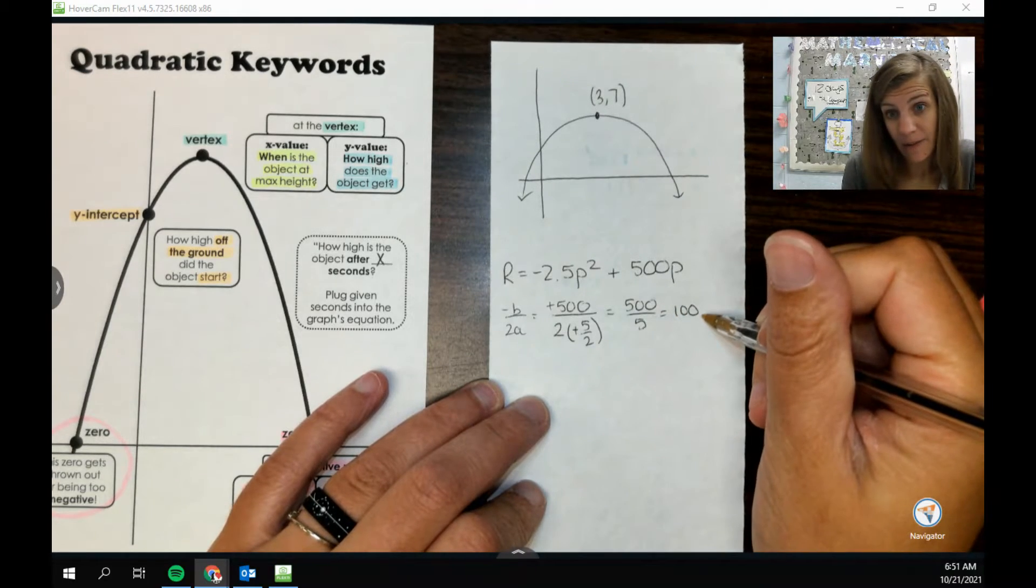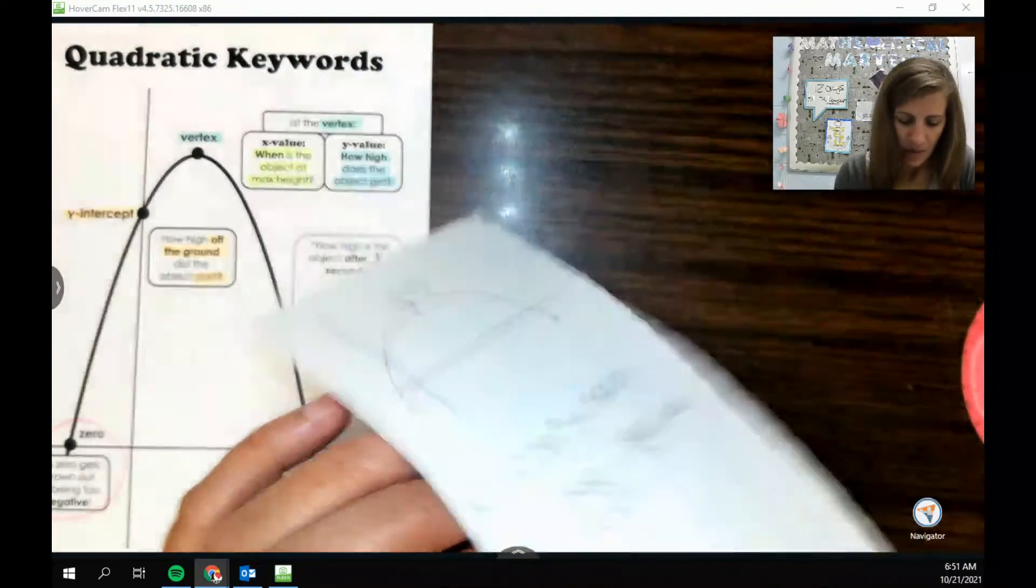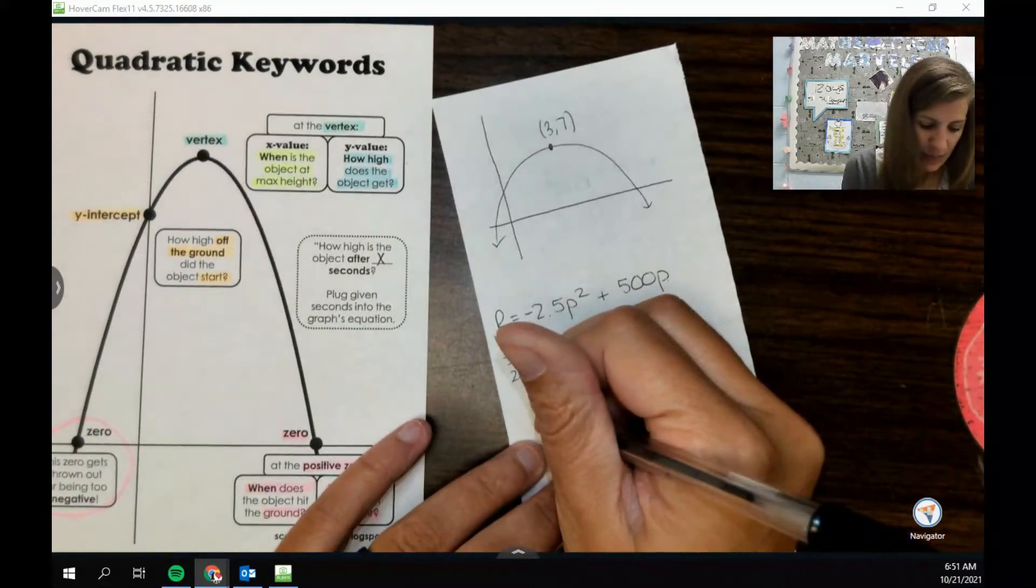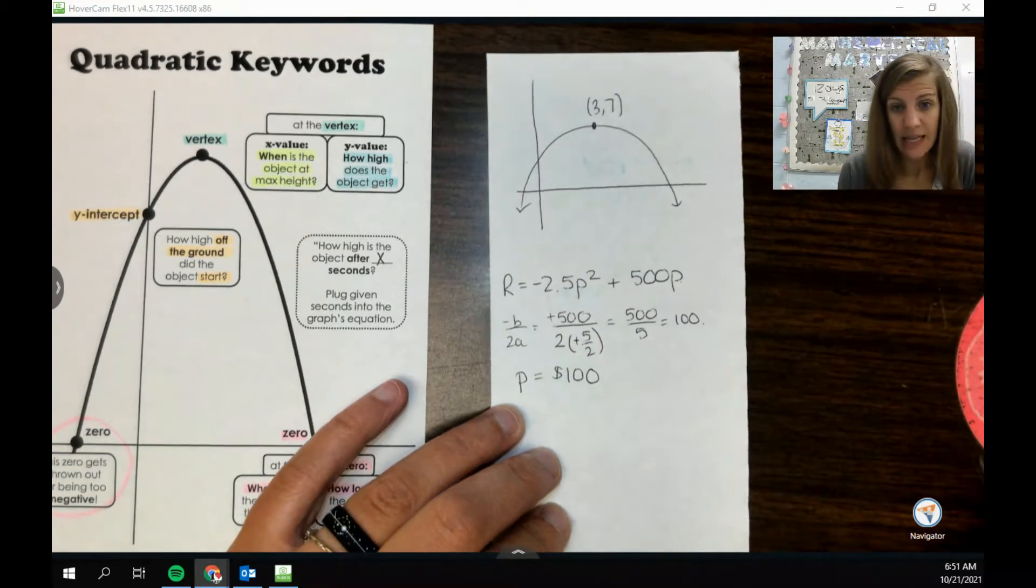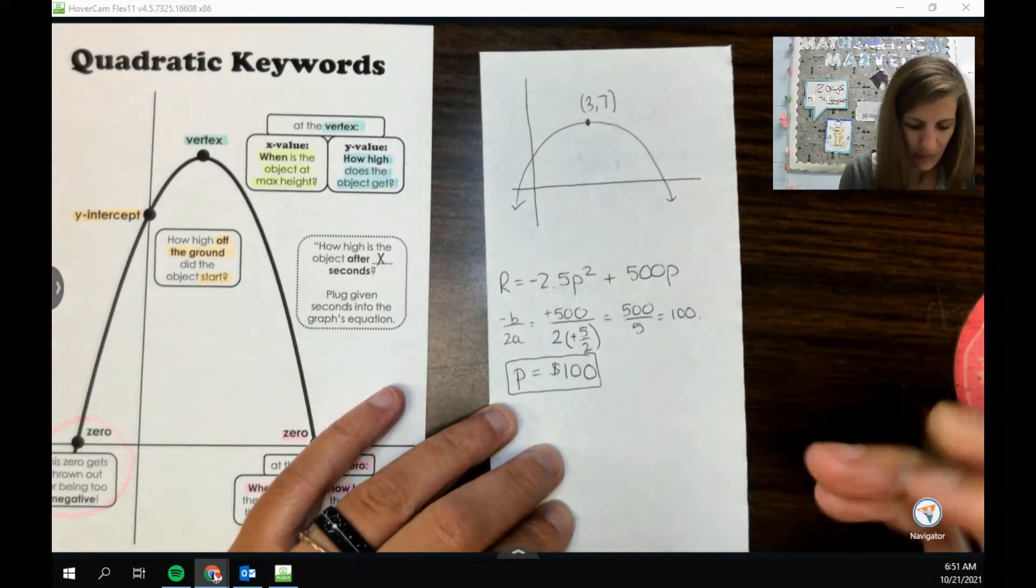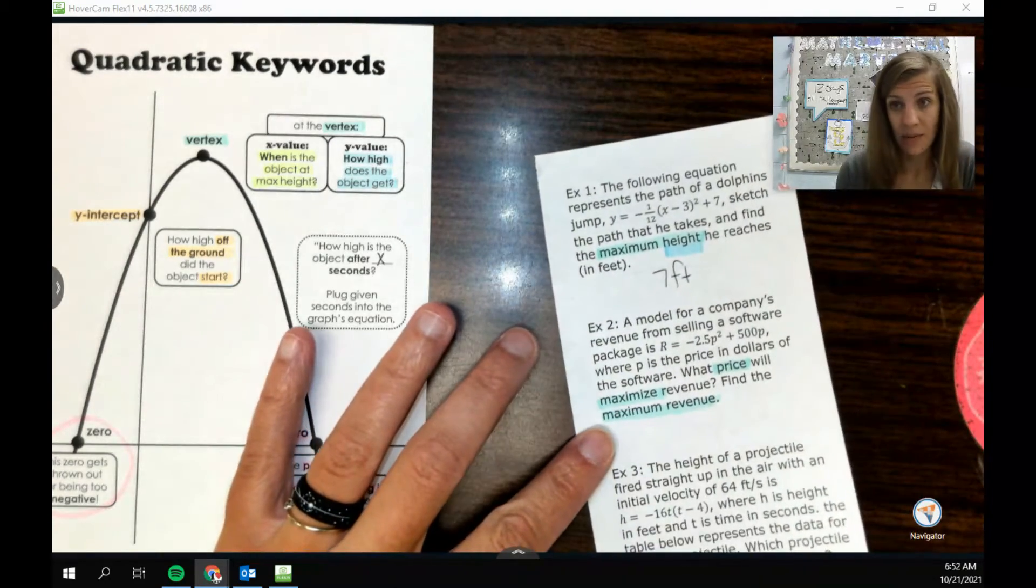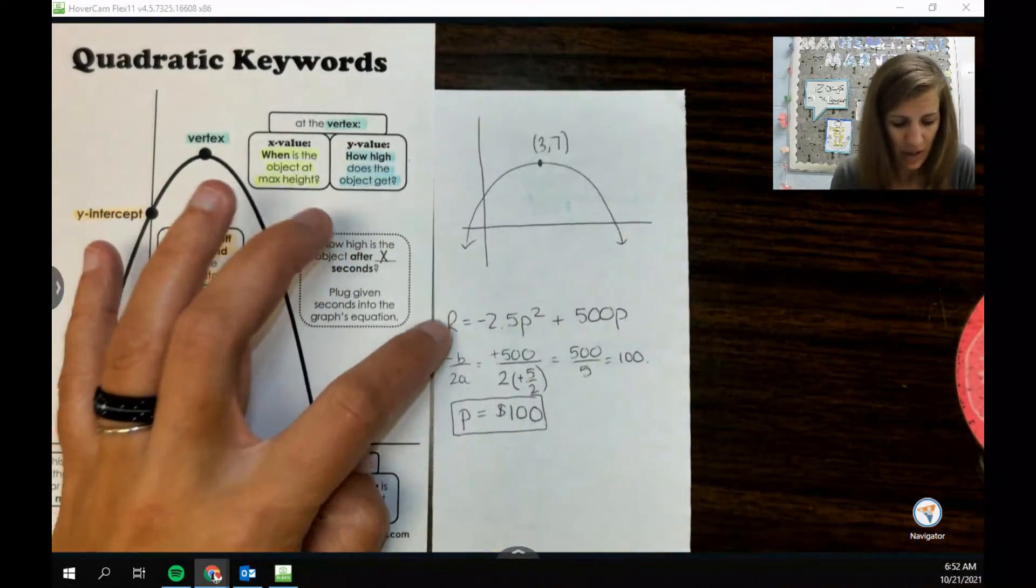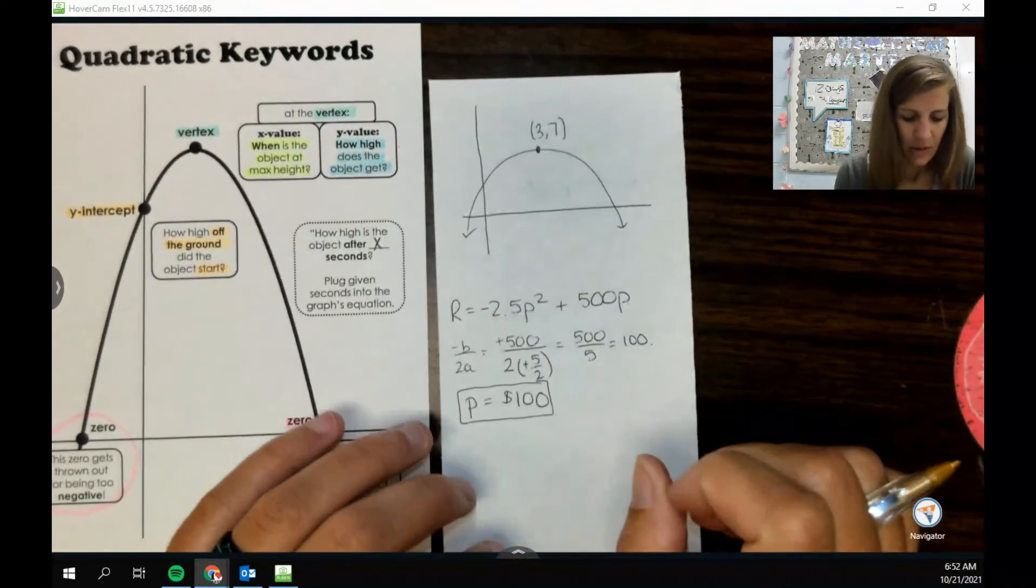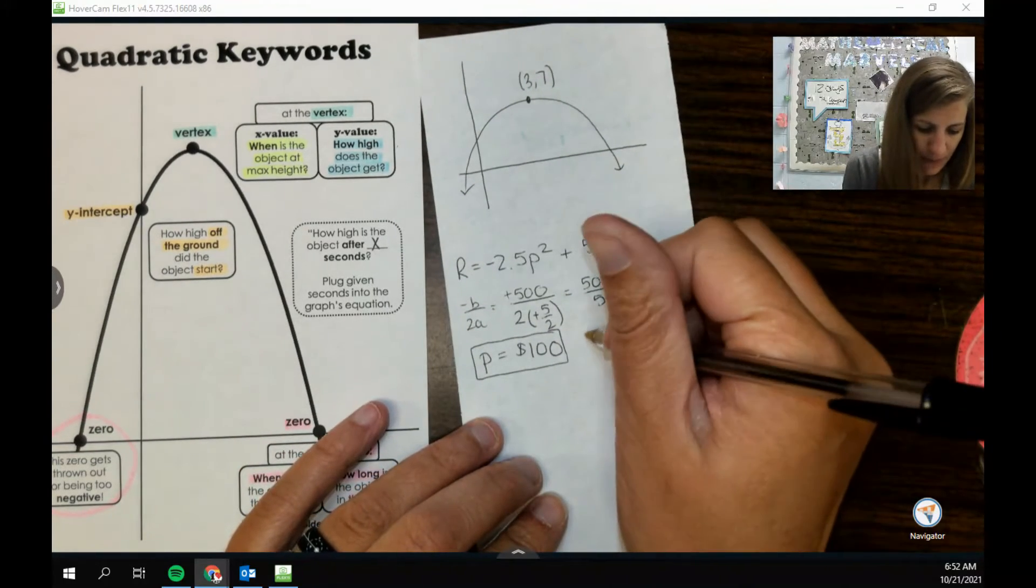Now this is the x value, which is really represented by p, which is the price. So the price that will maximize revenue is a hundred dollars. We also wanted to figure out though what was the maximum revenue, so we also want to find that y value, which is the r. And so we want to plug 100 in now. So kind of big numbers, but we're going to have negative 5 over 2, I'm going to do it, 100 squared plus 500 times 100.